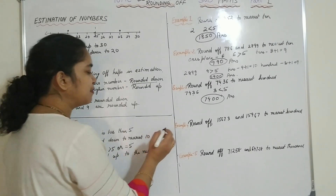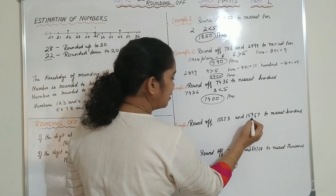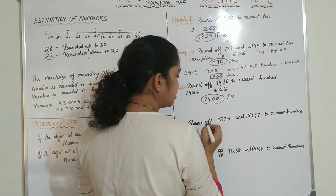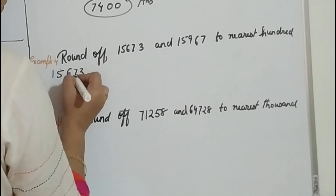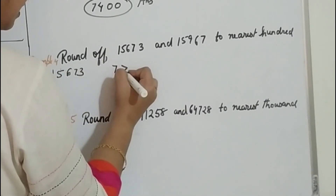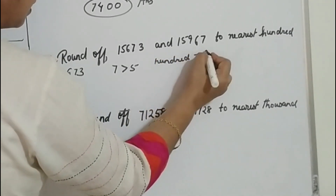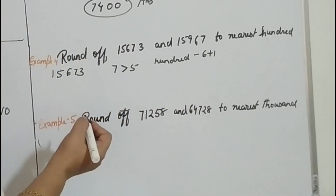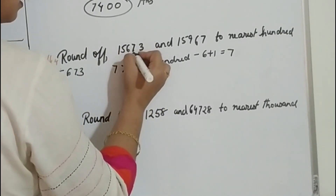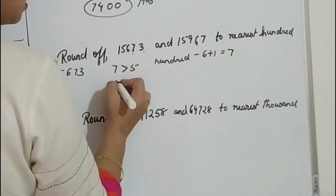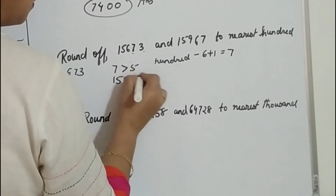Now the 4th example: round off the numbers 15673 and 15967 to the nearest 100. For 15673, we look at the number in the 10s place — it is 7. Since 7 is greater than 5, in the 100s place the digit 6 increases by 1 to become 7. It is rounded up and the 10s and 1s places become 0. So the answer is 15700.